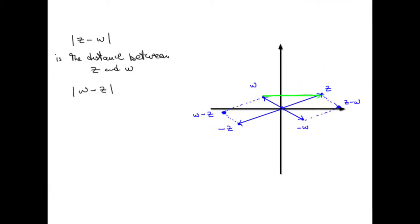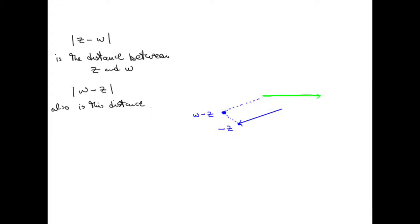So to find the distance between two complex numbers in the complex plane, subtract them and find the modulus. Let's try an example.